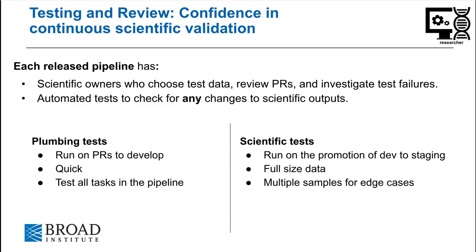We want researchers to be able to trust our pipelines and we want to feel confident in the continued scientific quality of them. Each released pipeline has a scientific owner who reviews PRs to that pipeline and helps to investigate test failures. Additionally, we have implemented automated plumbing and scientific tests for each pipeline. The tests are looking for exact matches in the scientific outputs, which helps guarantee that releases don't impact the scientific results unless intended. Plumbing tests are as quick as possible while still testing all steps in the pipeline and run on PRs to develop. Scientific tests run on the promotion from develop to staging and are on full-size samples. Multiple samples are chosen for the scientific tests to catch different edge cases in the data like high contamination or low coverage.